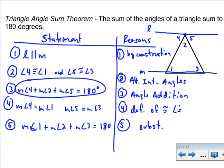And that is exactly what we wanted to prove, that 1 plus 2 plus 3 equals 180. And that is how you can go through and prove that the angles in a triangle all add up to 180 degrees.